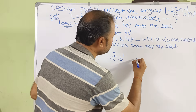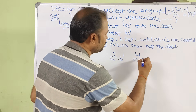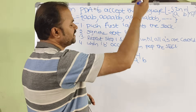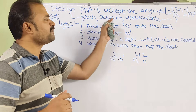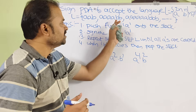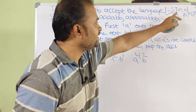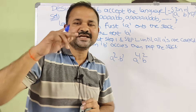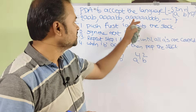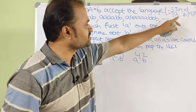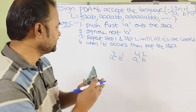If N equals 2, we get A^4 B^2 — write A four times and B twice. If N equals 3, we get A^6 B^3 — write A six times and B three times.